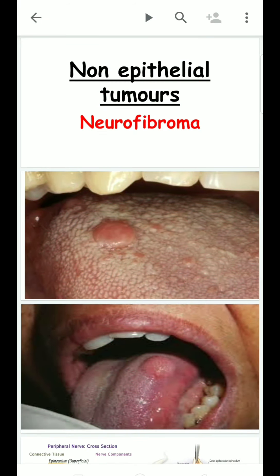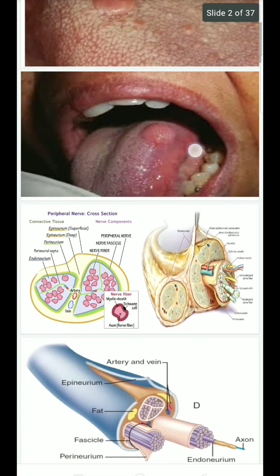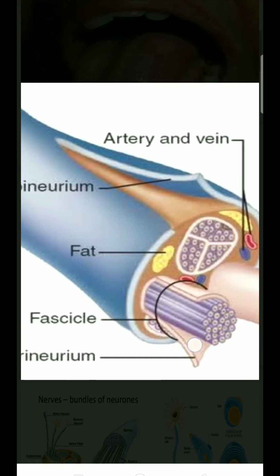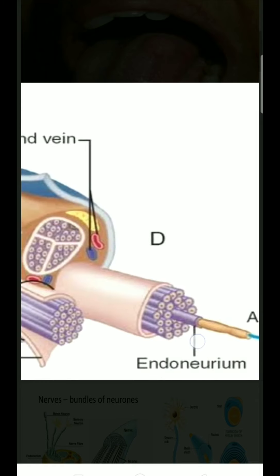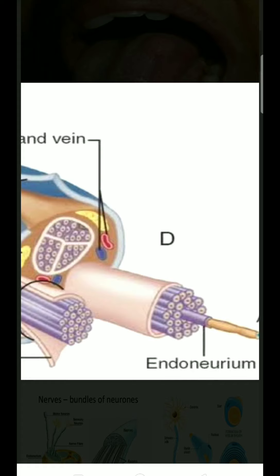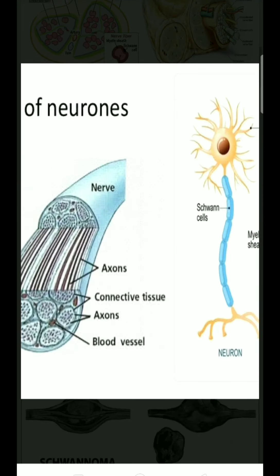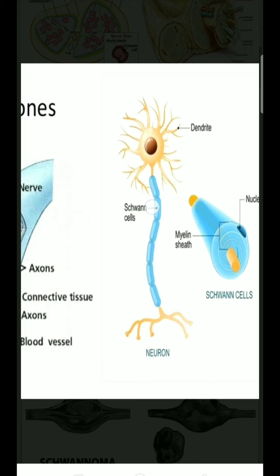Today we have to discuss about the topic neurofibroma in non-epithelial tumours. Before going to the topic we need some basic anatomy: this is the perineurium, this is the endoneurium, this is the epineurium, this is the axon, and this axon contains Schwann cells.